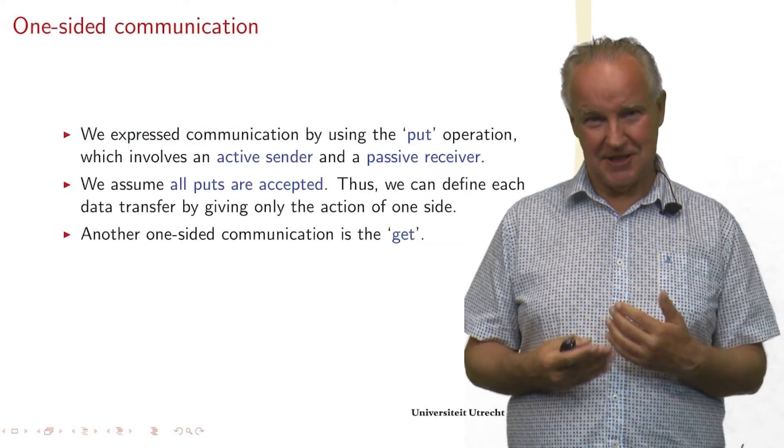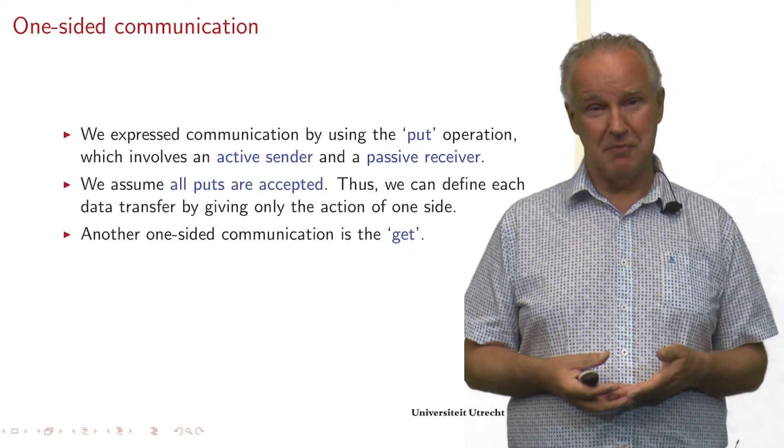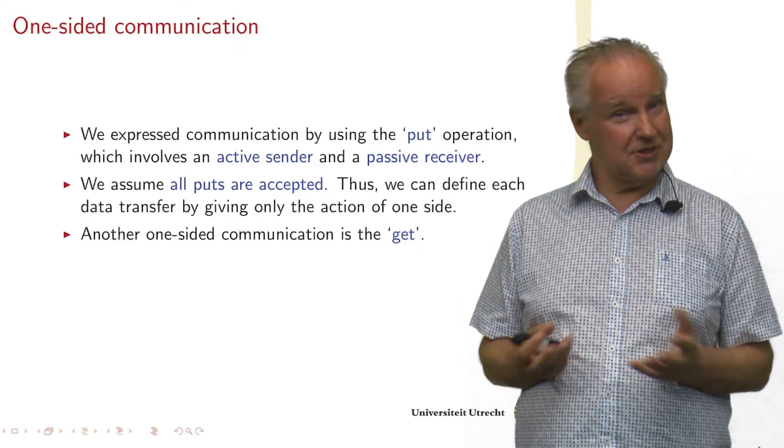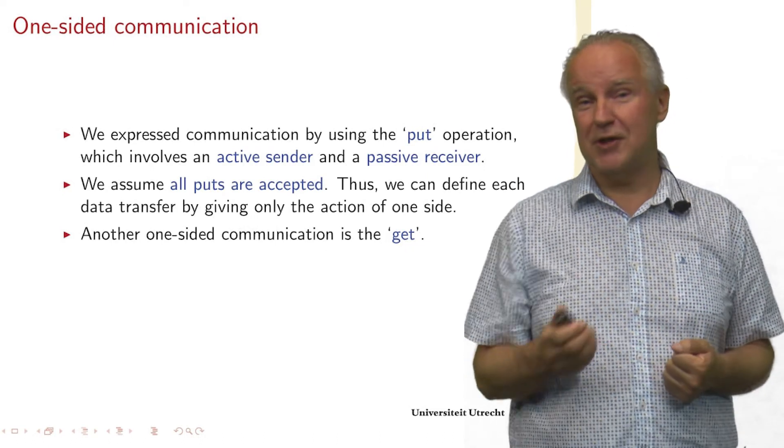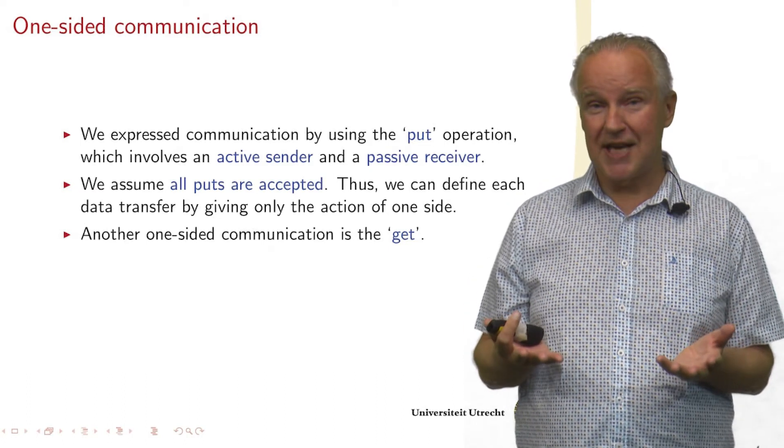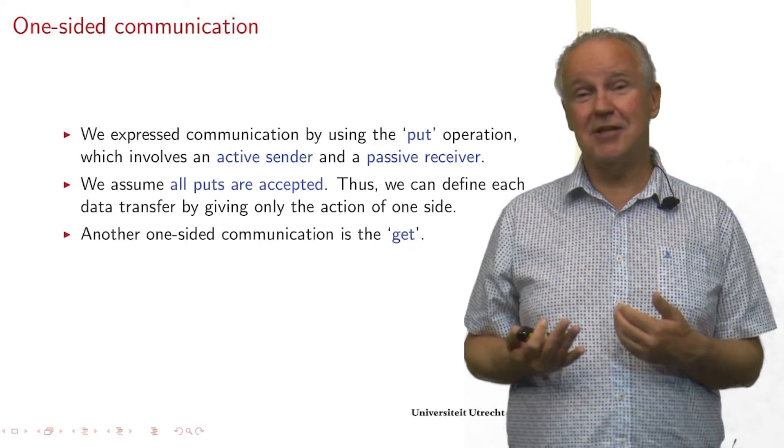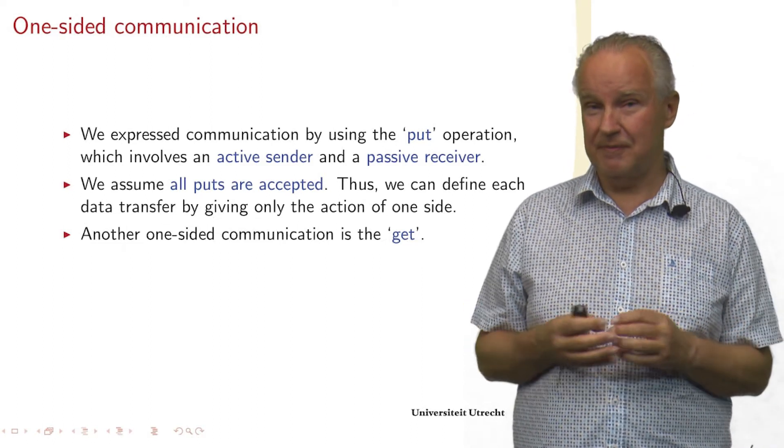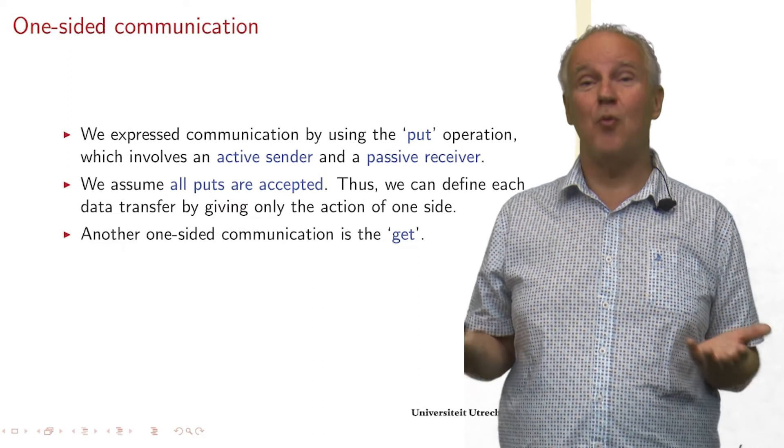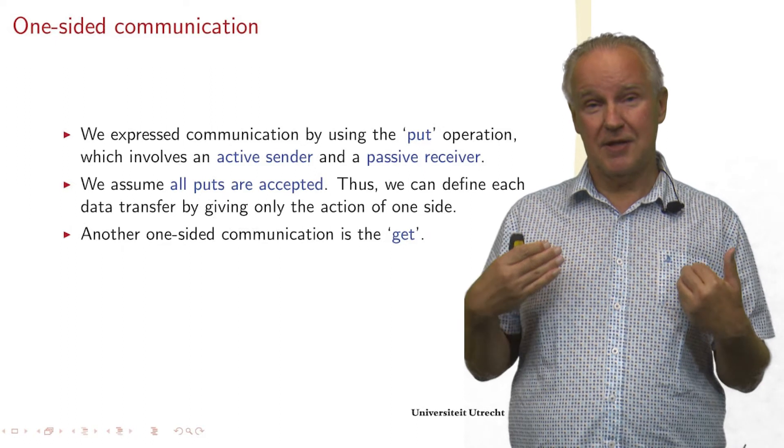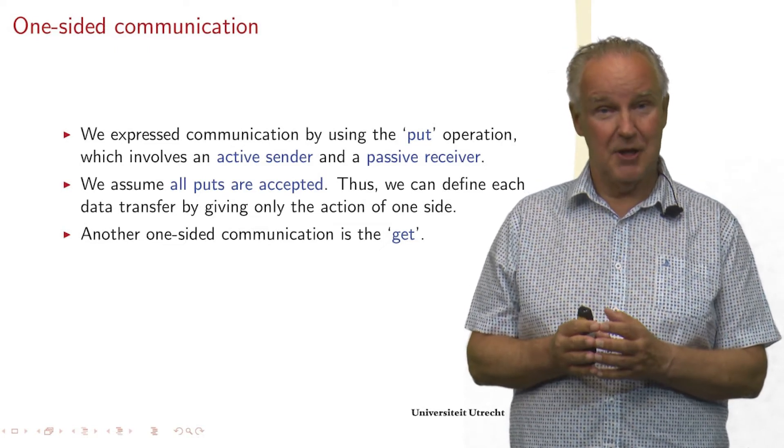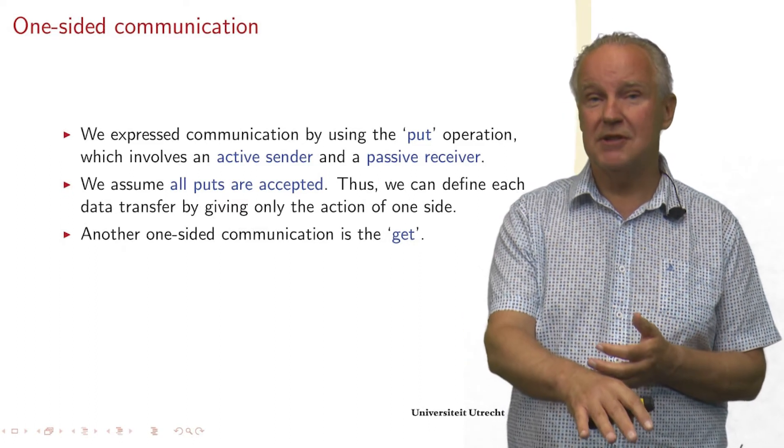One-sided communication is the type of communication that we use within the BSP model. We've seen in the algorithm that I just showed that we use for communication a put statement. And the put is just what it says. I put something on a table, or in this case, I put a data word into a different processor. And the other side is passive. The receiving side doesn't do anything. And that means that in our program texts, we only have to write the put. We don't need to write something like receive this data. It's being done automatically. The only question is when is this being done? And the answer is that we know that after the next synchronization, synchronization, so the synchronization that ends the super step, we can use the data. Then we are sure that what we have put has arrived.